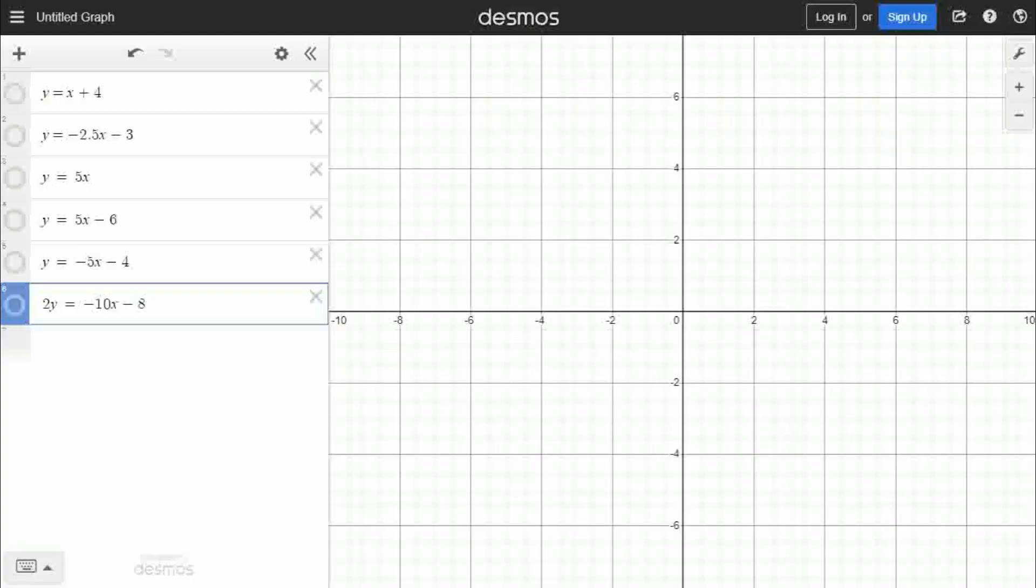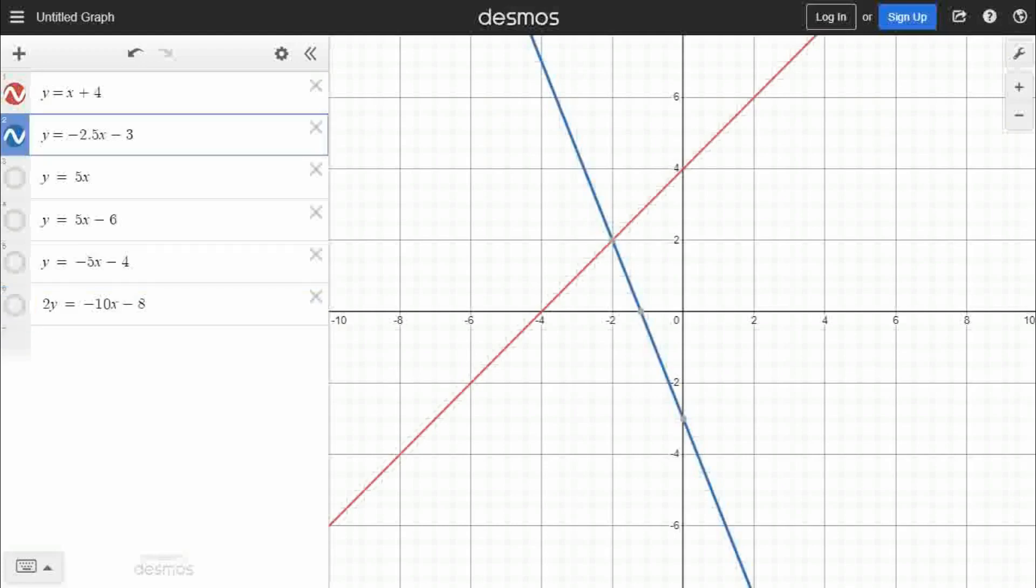So if I show these first two lines, y equals x plus 4, and then y equals negative 2.5x minus 3, you'll see that we have intersecting lines. And right there, at negative 2, 2, is going to be our solution, because that is the point where the two lines meet. And if we were to plug those coordinates into both of these equations, we would get true statements.